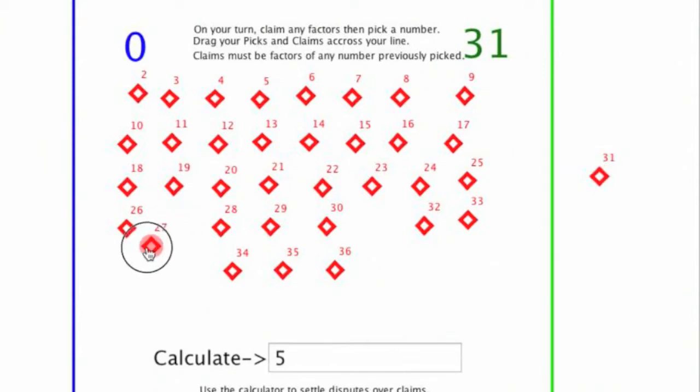If the blue team grabs 27, they now should understand that they have given the opportunity to the other person to claim factors of 27. So if the green team says, 3 goes into 27, they claim it and move it to their side.